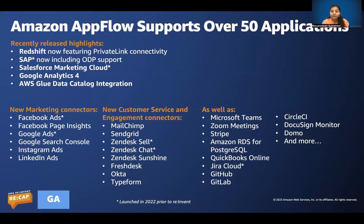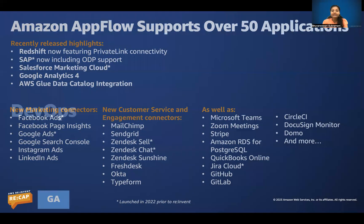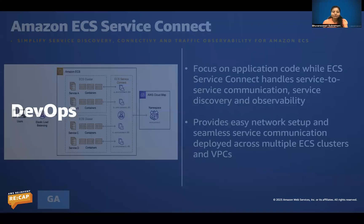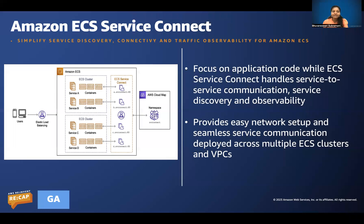Now we move to the third section: DevOps — covering launches in resiliency, deployments, and observability. The first is Amazon ECS Service Connect. It addresses the monolithic-to-microservices transition — microservices architecture is composed of small independent services that communicate over well-defined APIs. Customers often face challenges establishing networking between these microservices.